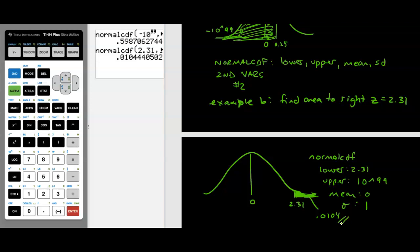That's the tool we're going to be using: NormalCDF. This is how we calculate an area underneath a standard normal curve, or any normal curve for that matter. Just follow the prompts in the calculator, entering the lower bound, upper bound, mean, and standard deviation.